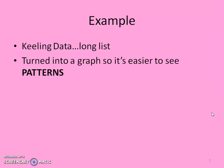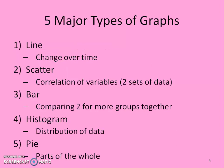He talked about this Keeling data, and it was a long, long list of information, and he said that doesn't really help us. So what helps us is to put all of that information — those lists of data — into some kind of graph, and it makes it easier to see these patterns. That's what a graph really helps us do: figure out patterns and make it easier to analyze the data.